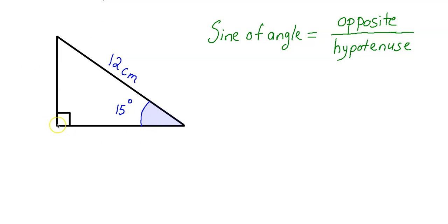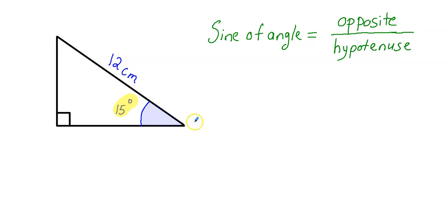So the first thing you want to realize is that this is a right triangle. For this problem, it's going to be a right triangle, and that's what this marking means right here — it means that this angle measure right here is 90 degrees. Now, the next thing you want to know is this angle measure shaded in blue right here measures 15 degrees. And this is not drawn to scale, just keep that in mind. I'm going to highlight this angle because this is the angle we are going to be referencing for now — that's going to change a little bit later. And you should also notice that this side length is 12 centimeters. So let's go ahead now and use the concept of the sine ratio.